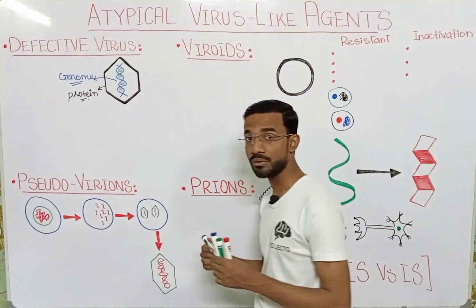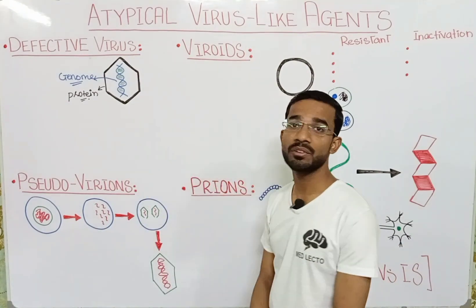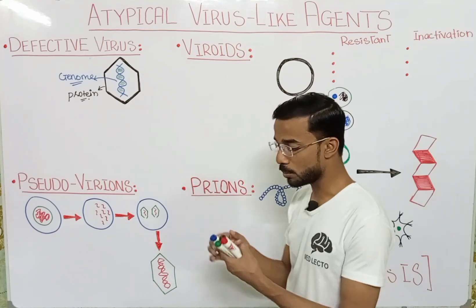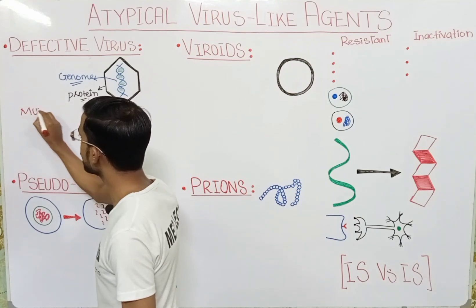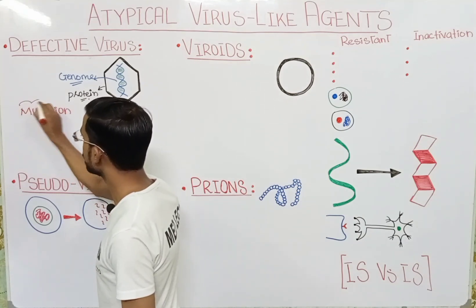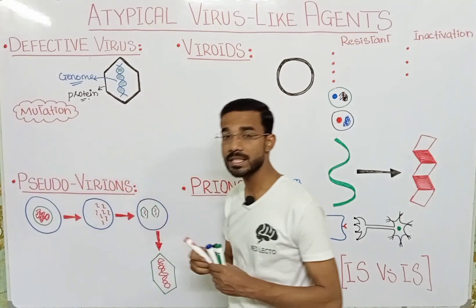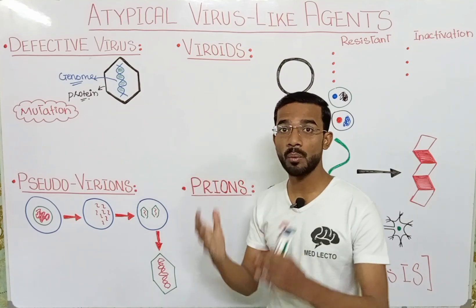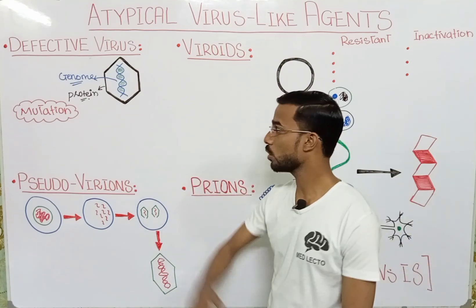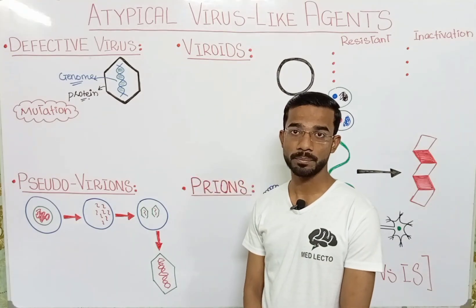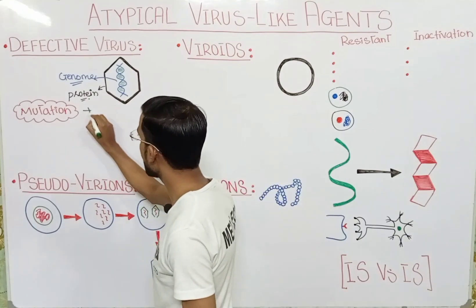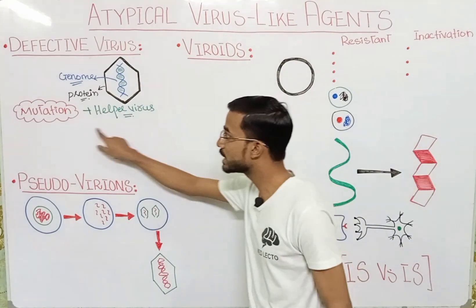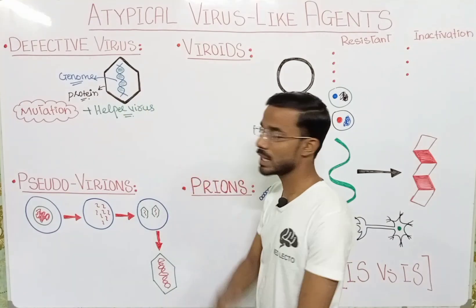What is the difference between the normal infectious virus and the defective virus? In the defective virus you will see deletion of genetic material, or you can say mutation. So the most important point is there is a mutation in the genetic material. If there is a mutation, it will face some difficulty in its replication, so it actually requires a helper virus for its replication because some part is missing in its genome. That helper virus fulfills the defective requirements of the defective virus.